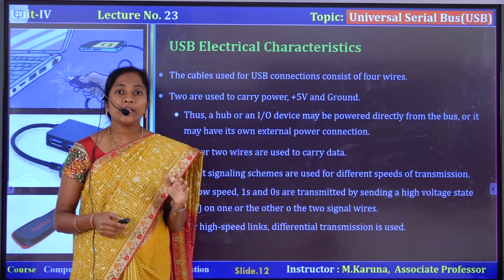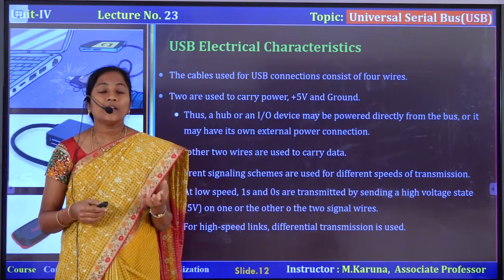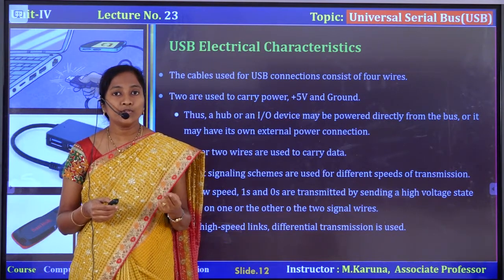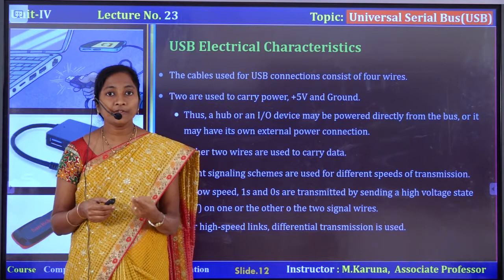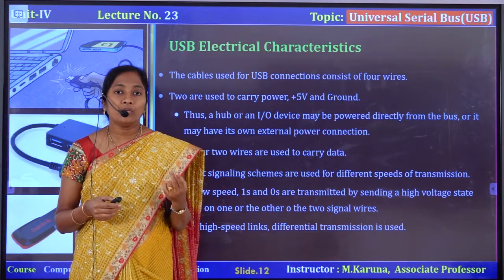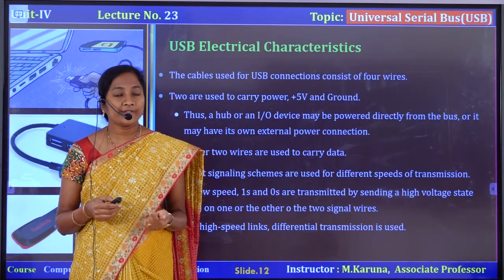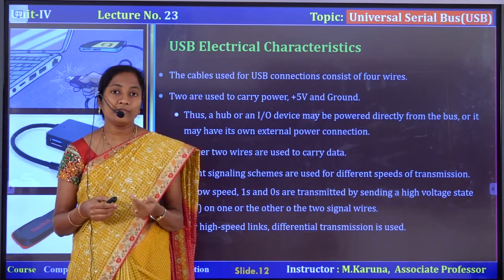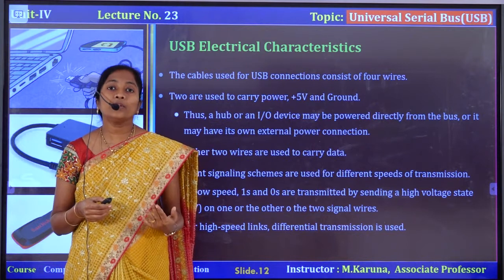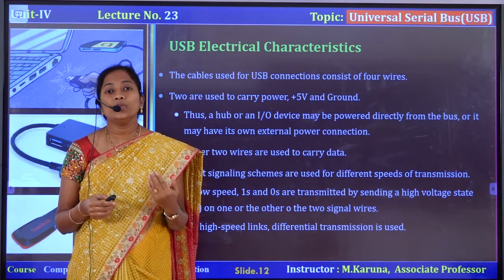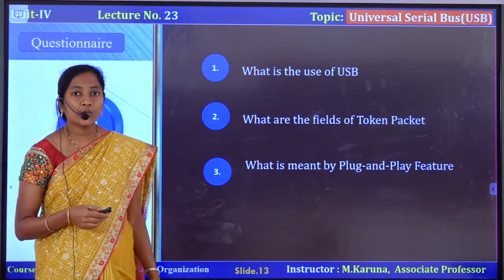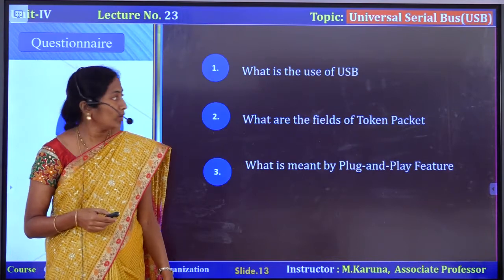Electrical characteristics: USB contains 4 wires. Two wires are used for power transmission — one line for plus 5 volts and another for ground. The other two wires are used to transfer data.